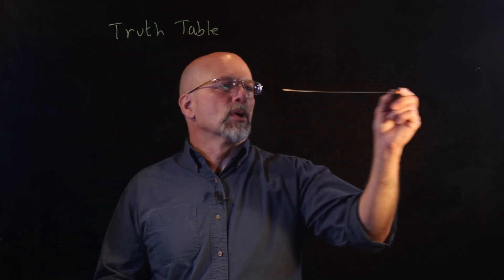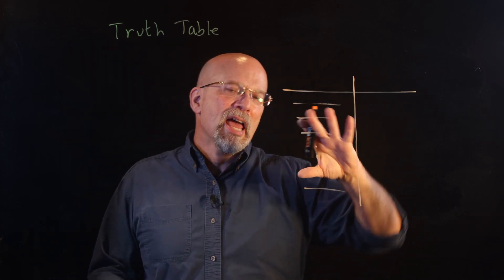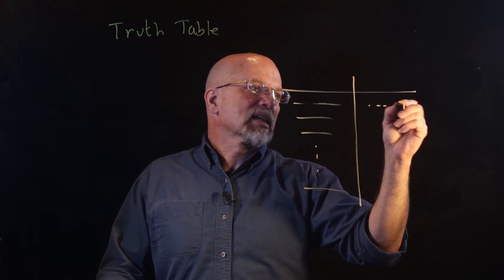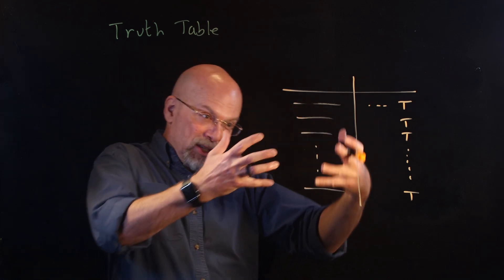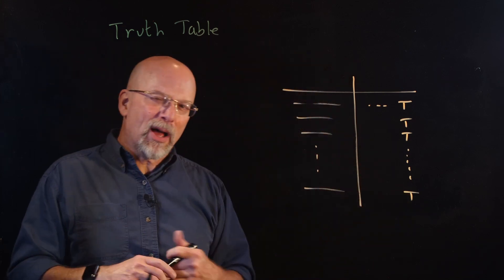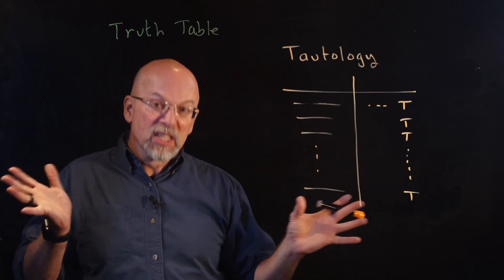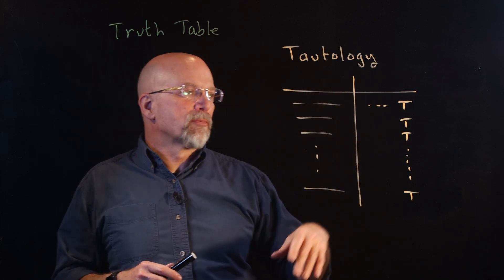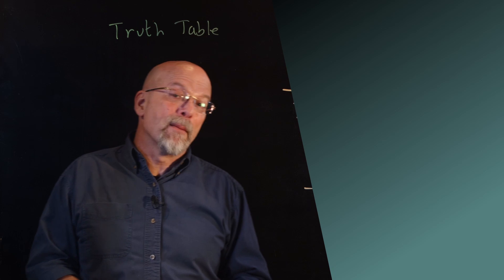One last thing before we wrap up this short lesson. If I've listed all possible combinations on the left-hand side of a truth table and, after going through the order of operations for my compound proposition, the last column is all trues — meaning the proposition is true for every possible combination — we have something called a tautology. A tautology is a truth table where, for every possible combination of input propositions, we get a true result. In our next video, we'll talk about basic truth tables at the atomic proposition level, and after that we'll start combining them to derive truth tables for compound propositions.